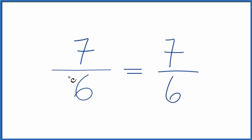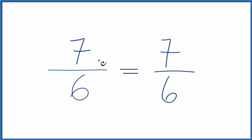And that's what we started with, 7 over 6. What that means is that this fraction, 7 over 6, is already simplified. We can't reduce this any further.